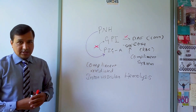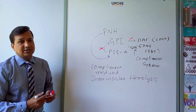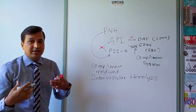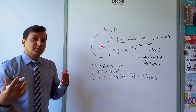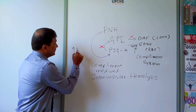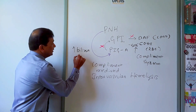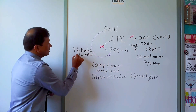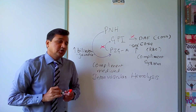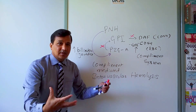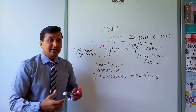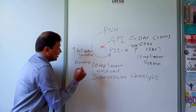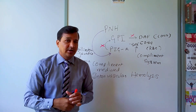With intravascular hemolysis, hemoglobin is broken down and carried by haptoglobin to the liver, where it is converted to bilirubin. This leads to increased bilirubin and jaundice in PNH patients. Additionally, the constant complement-mediated hemolysis reduces hemoglobin levels, causing anemia.